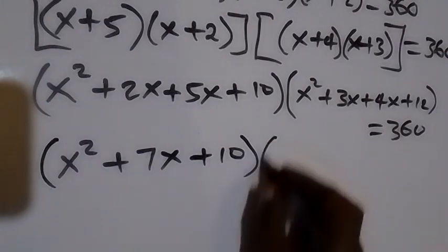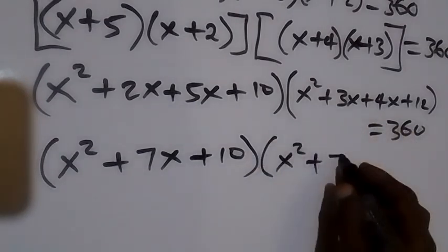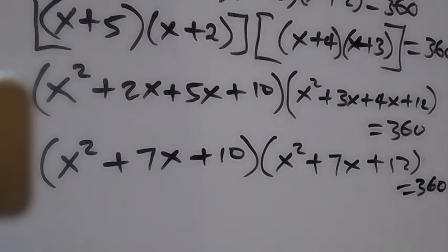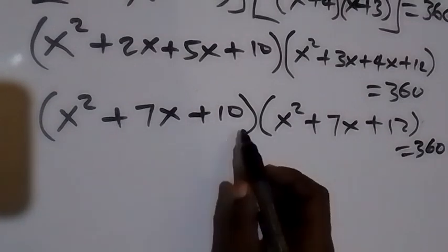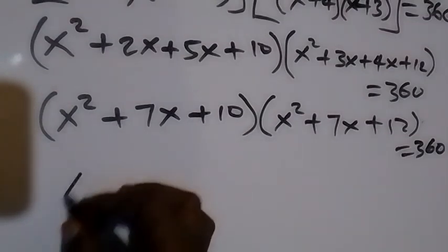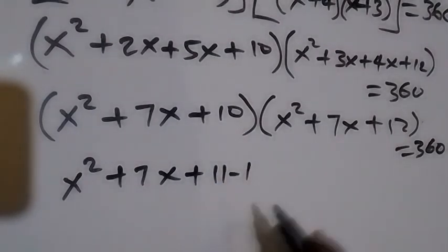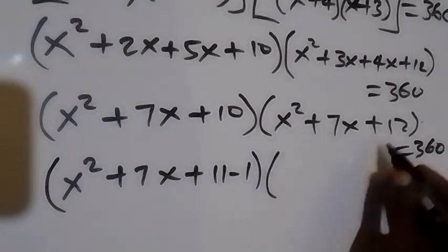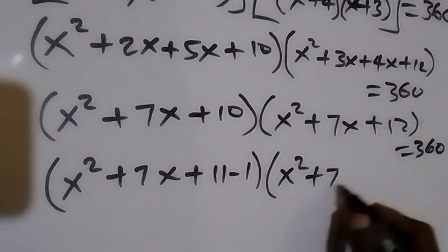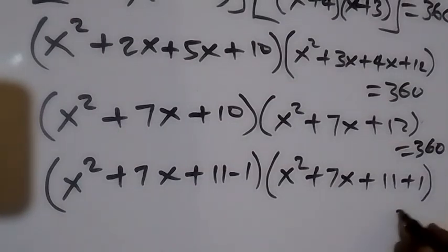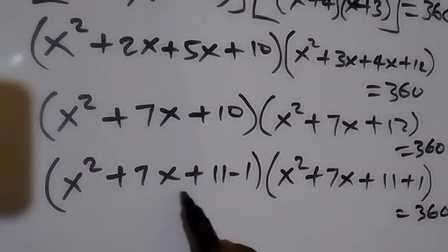This gives us equals to 360. We can rewrite this as (x²+7x+11 − 1) times (x²+7x+11 + 1) equals 360, since 10 = 11−1 and 12 = 11+1. We have obtained something similar in both brackets: x²+7x+11.